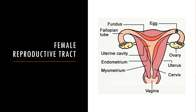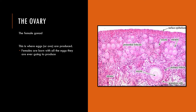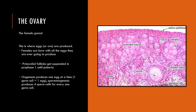Moving on to the female reproductive tract — the female gonad is the ovary, where the eggs, or ova, are produced. Females are born with all the eggs they will ever produce, beginning in utero. Primordial follicles in the ovary get suspended in prophase 1 until puberty, at which time they continue meiosis. Oogenesis — the process of making ova — produces only one egg at a time: one germ cell equals one egg, and these eggs are haploid. By contrast, spermatogenesis produces four sperm cells for every one germ cell, making sperm production far less energy-consuming than producing an ovum.